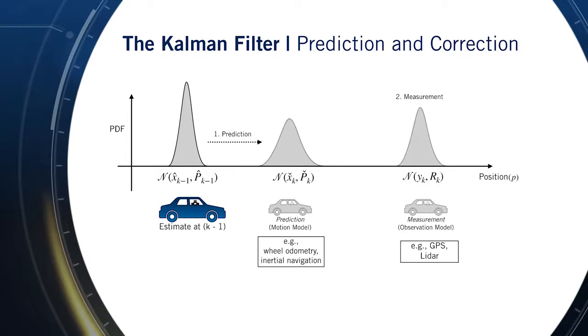Then, we'll use the observation model derived from GPS, for example, to correct that prediction of vehicle position at time k. Each of these components, the initial estimate, the predicted state, and the final corrected state, are all random variables that we will specify by their means and covariances.